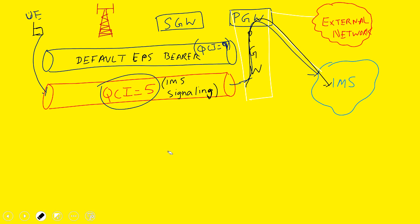To summarize: QCI1 and QCI5 will both remain established only as long as you are on a voice call requesting voice data. Once you stop requesting voice services, QCI1 will be taken down. But QCI5 will remain because it acts as the default IMS signaling bearer — used to set up and tear down the QCI1 bearer as needed.